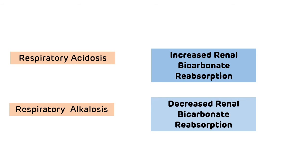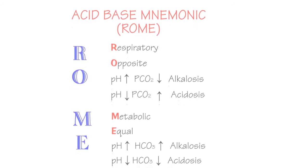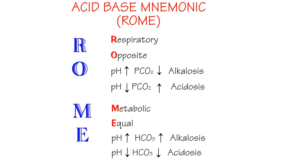This picture shows the mnemonic ROME, which helps you remember acid-base disorders. R stands for Respiratory, O for Opposite, M for Metabolic, and E for Equal. In respiratory disorders, pH and PCO2 move in opposite directions — for example, in respiratory alkalosis, pH increases while PCO2 decreases. In metabolic disorders, pH and bicarbonate move in the same direction — for example, in metabolic acidosis, both pH and bicarbonate decrease.